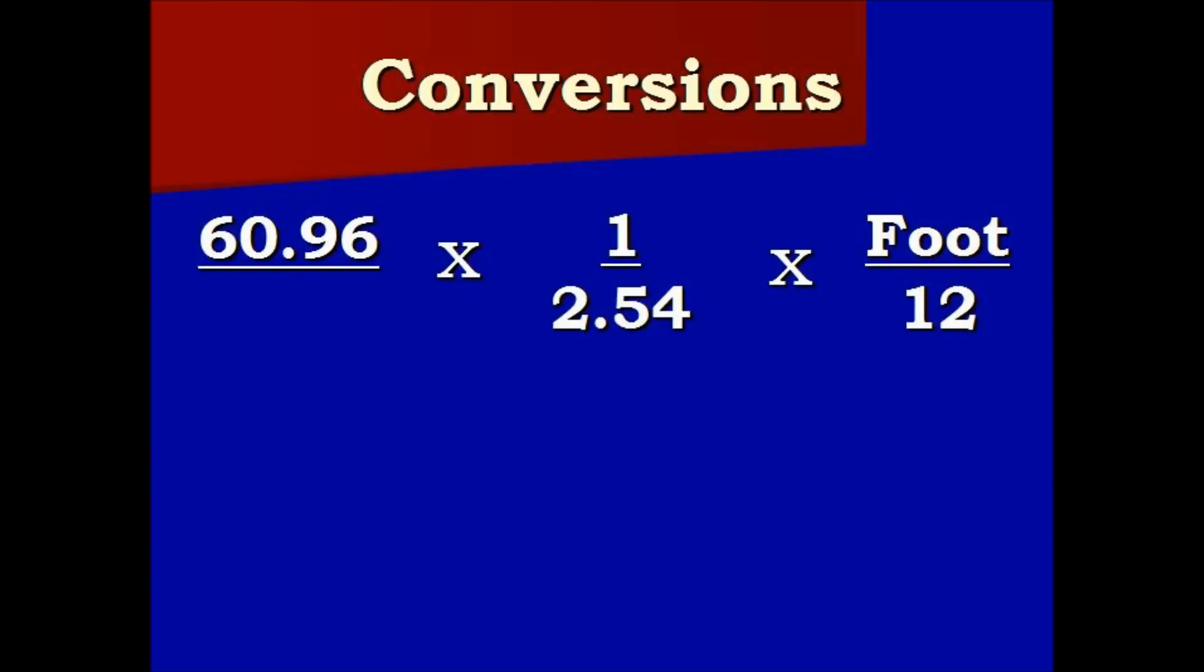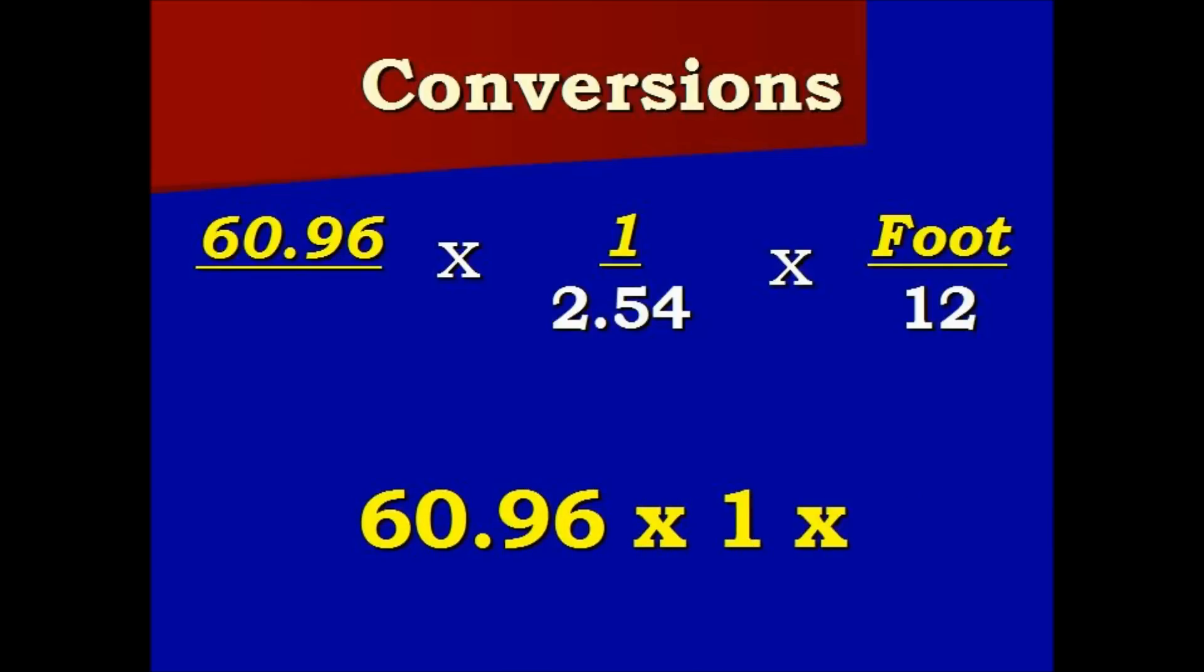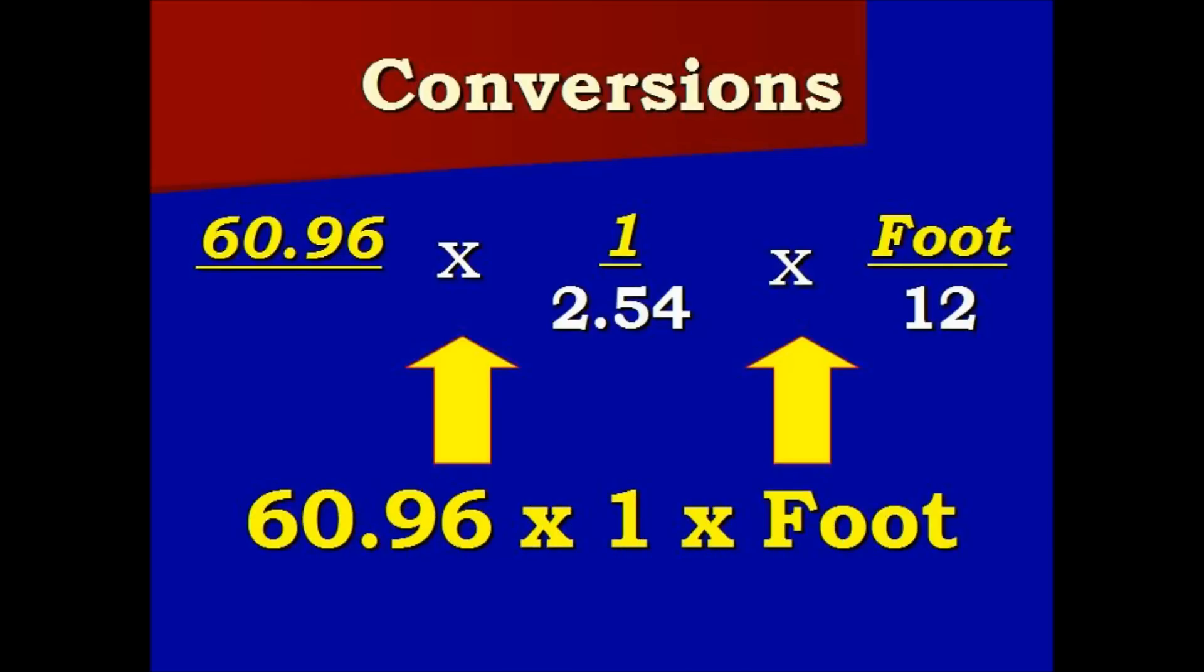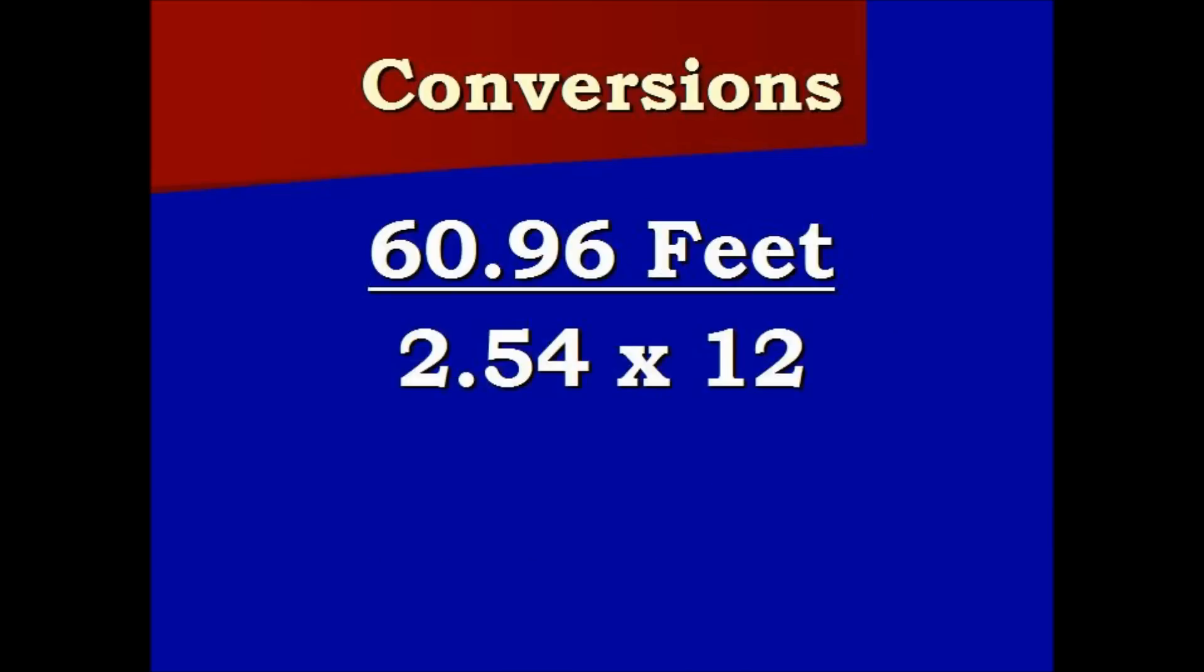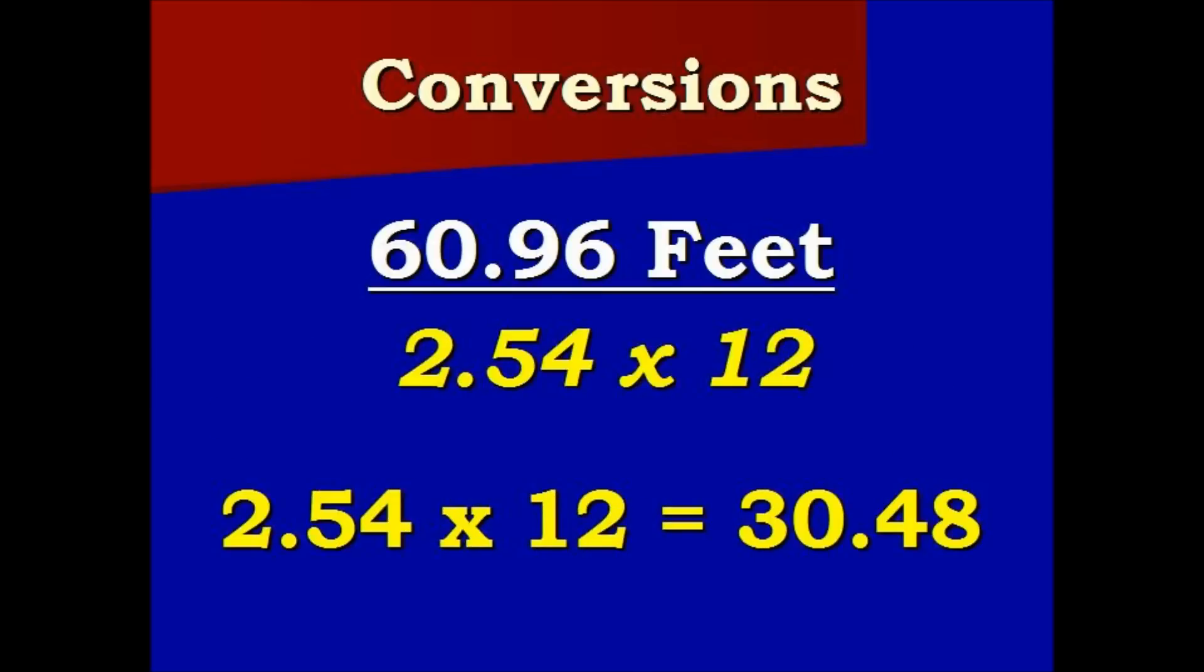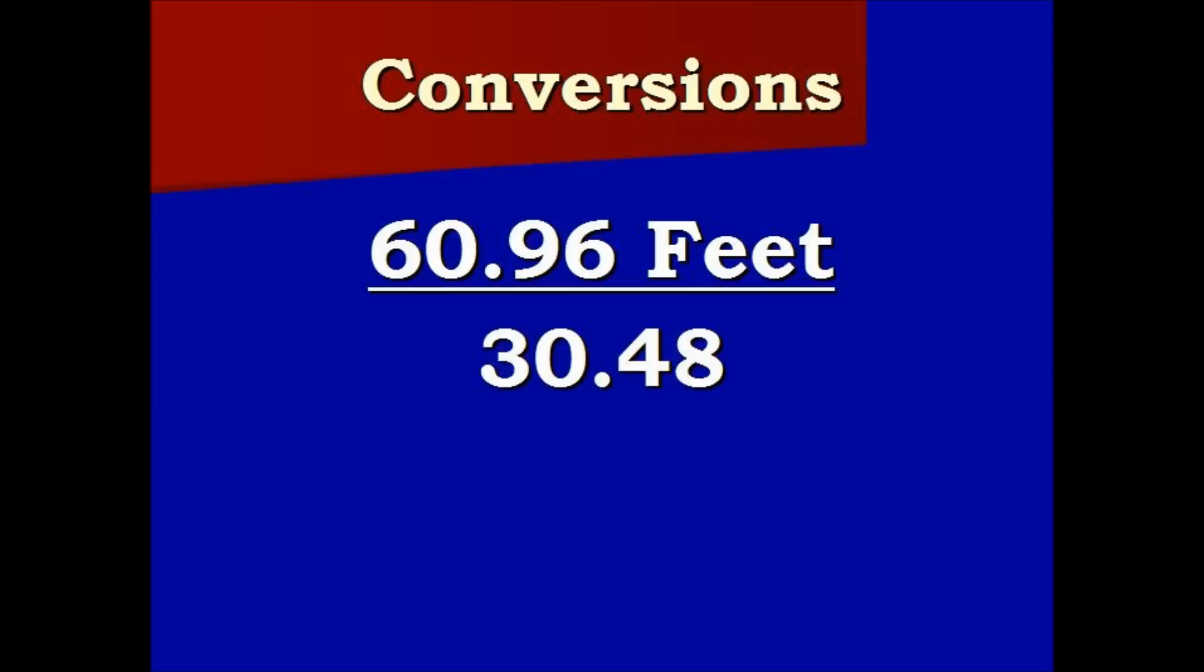Now we multiply. Sixty point nine six times one times one foot. Now we multiply on the bottom. Two point five four times twelve equals thirty point forty-eight. We plug that in. Now we divide to finish everything off. That's our solution.